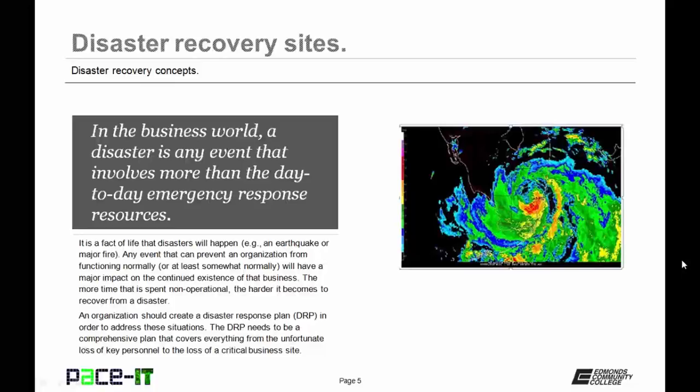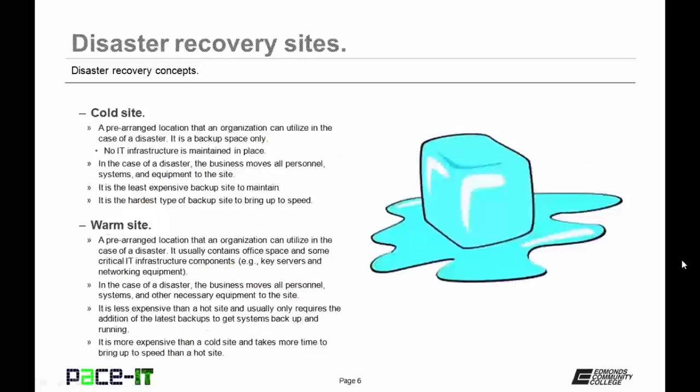The more time that is spent non-operational, the harder it becomes to recover from a disaster. An organization should create a disaster response plan, also known as a DRP, in order to address these situations. The DRP needs to be a comprehensive plan that covers everything from the unfortunate loss of key personnel to the loss of a critical business site. There are several strategies that can be covered in the DRP that involve the loss of a critical business site.